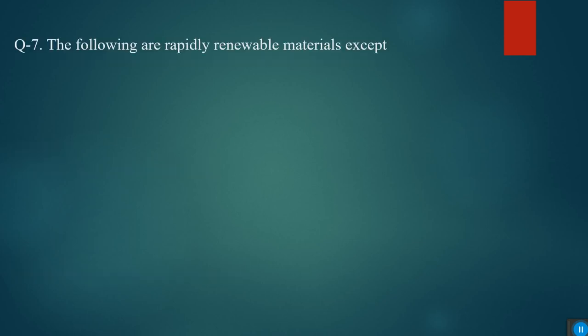The following are rapidly renewable materials except: bamboo wood wool carpet, bamboo doors, linoleum flooring. Think of something - what should be the answer? It's bamboo wood; this is not a rapidly renewable material.